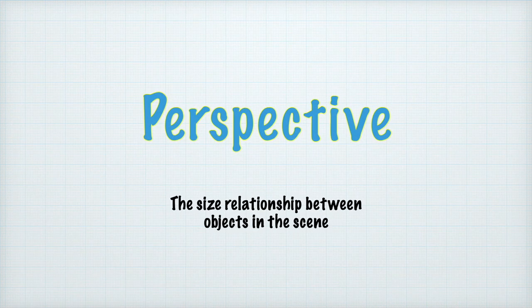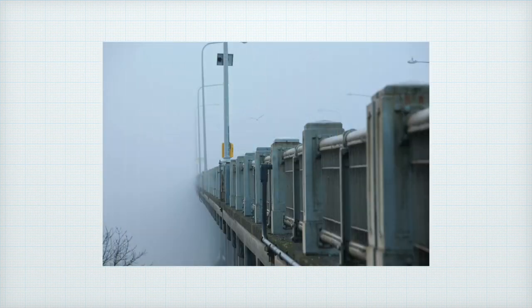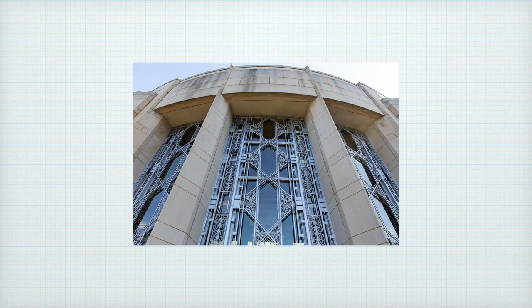Perspective is the size relationship between objects in a scene. We judge depth by comparing the size of known objects. Think of a long road with telephone poles — the ones closer look larger and farther apart, while those in the distance look smaller and closer together. Train tracks converge in the distance. We readily accept a photo showing perspective trailing off towards the horizon, but when we see a building narrowing towards the top, it makes us feel like the building is falling away from us.